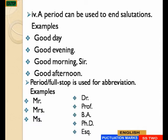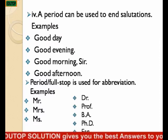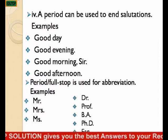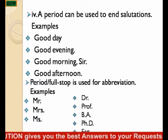Good afternoon. A period is used for abbreviations. Examples: Mr. for Mister, Mrs. for Missus, Ms. for Miss, Dr. for Doctor, Prof. for Professor, BA for Bachelor of Arts, PhD for Doctor of Philosophy, ESQ for Esquire. So these are abbreviations that attract a full stop.